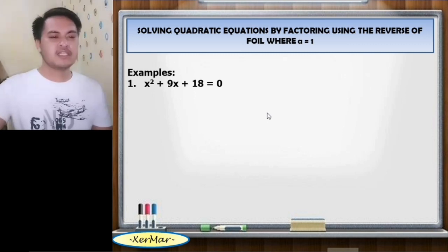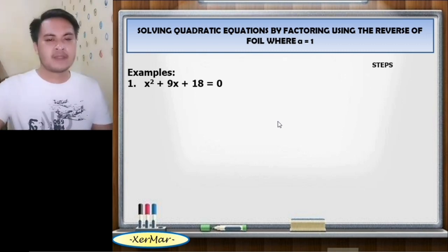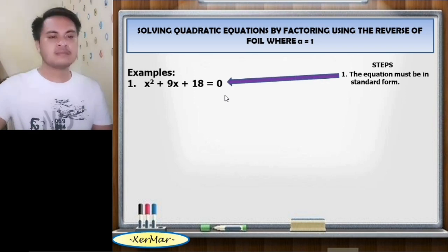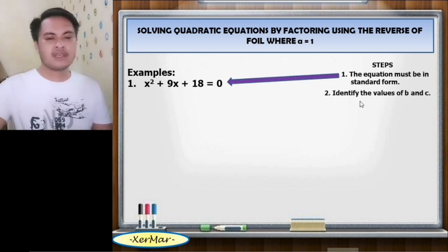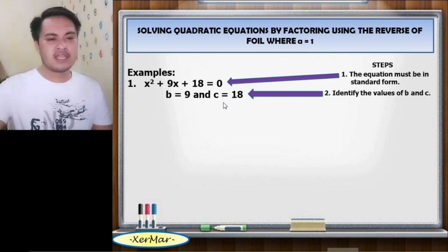Examples. Number 1: x squared plus 9x plus 18 equals 0. Let us recall the steps in solving this equation. Number 1, the equation must be in standard form — and here, the equation is already in standard form. Number 2, identify the values of B and C. Considering the value of A is 1, B equals 9 and C equals 18.